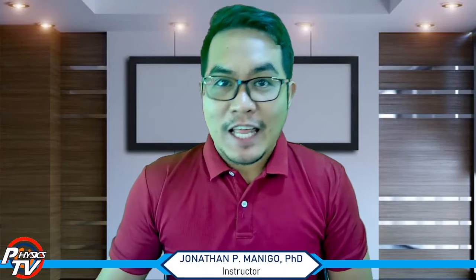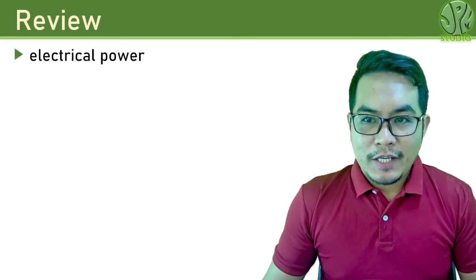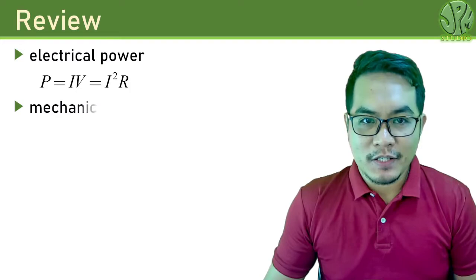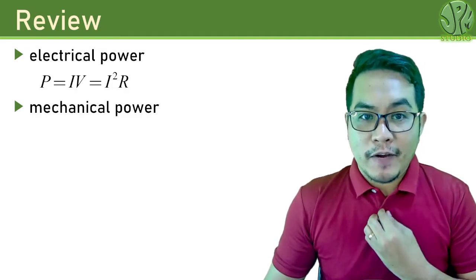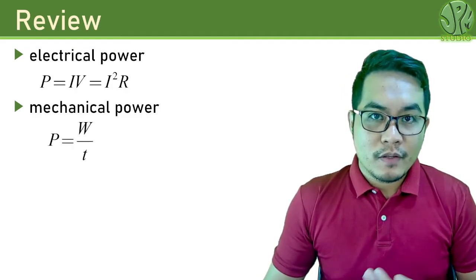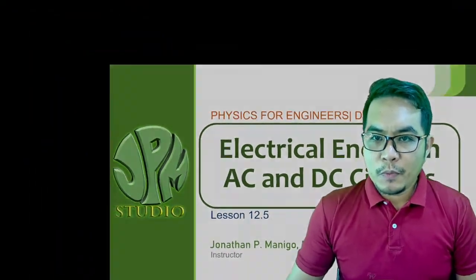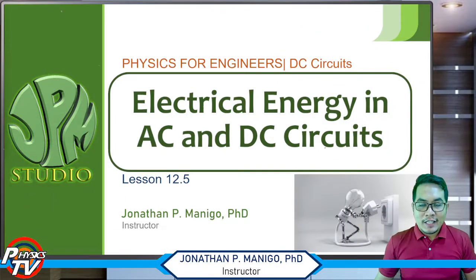Hello and welcome back to the course on Physics for Engineers. This is the last lesson for Chapter 12 on DC circuits. Before we proceed, let us first review some concepts. In the previous lesson we discussed electrical power — it's current times voltage, or current squared times resistance. We also defined mechanical power as work done per unit time. In this lesson we will be talking about electrical energy in AC and DC circuits.